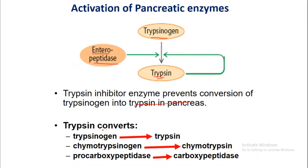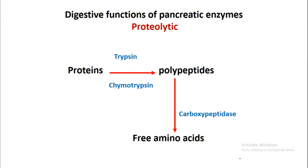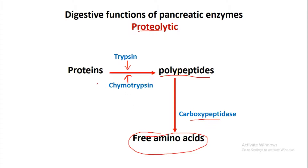Once trypsin is activated, it converts additional molecules of trypsinogen into trypsin, chymotrypsinogen into chymotrypsin, and procarboxypeptidase into carboxypeptidase. These three are the important proteolytic enzymes. In their digestive function: trypsin and chymotrypsin convert proteins into polypeptides, and carboxypeptidase converts polypeptides into free amino acids.